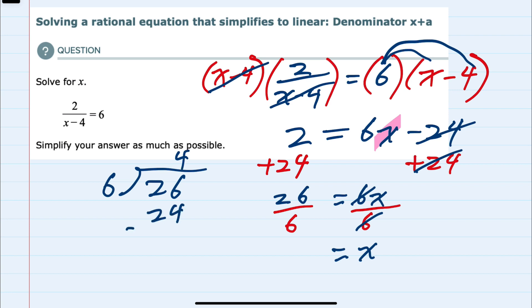with the remainder of 2. So 4 and 2 sixths, we can simplify that as 4 and 1 third, so we have solved for x.